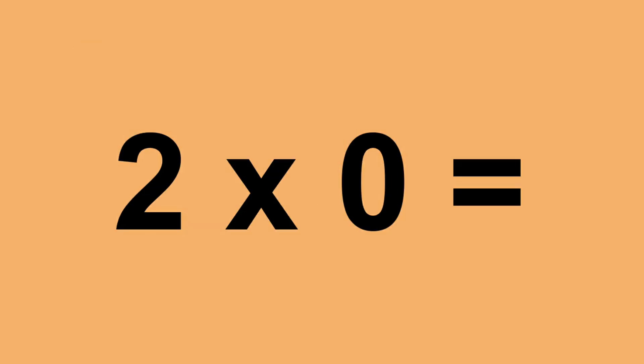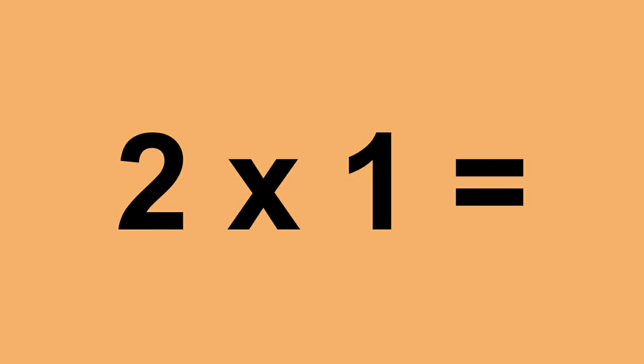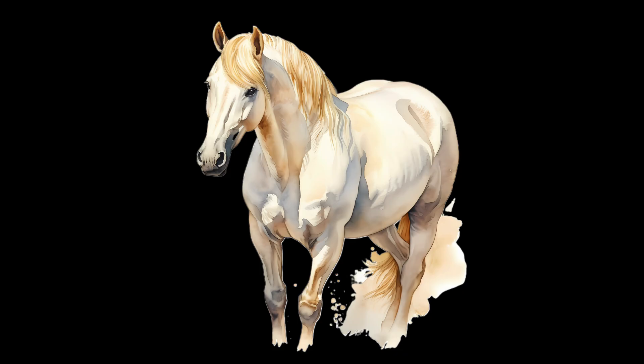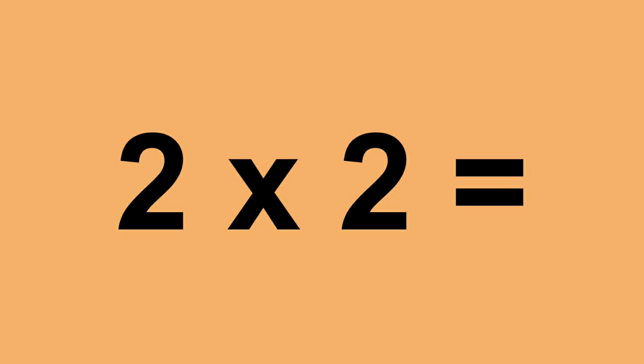2 times 0 equals 0. 2 times 1 equals 2. 2 times 2 equals 4.